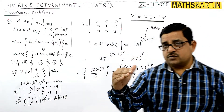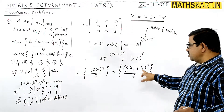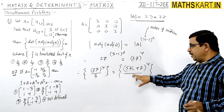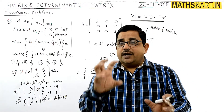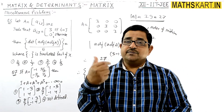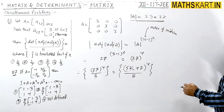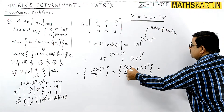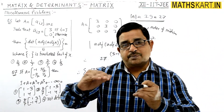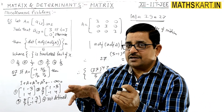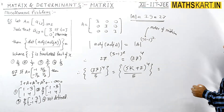Since it is raised to the power 4, we use the binomial theorem. We can write 27 as 5k + 2, so 27 to the power 4 equals (5k + 2) to the power 4. Using binomial expansion, there are five terms. The first four terms are divisible by 5, so they leave no fractional part.